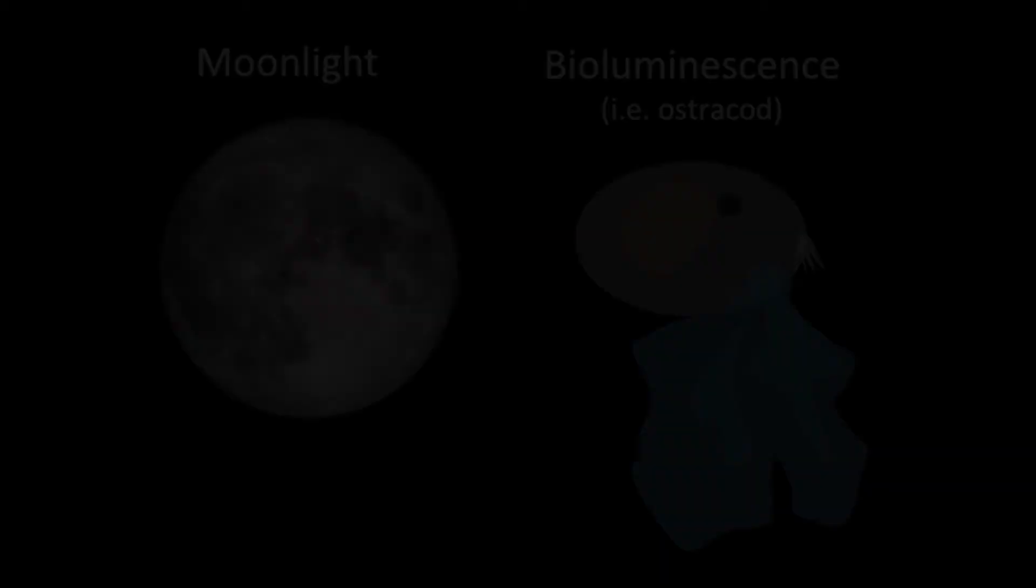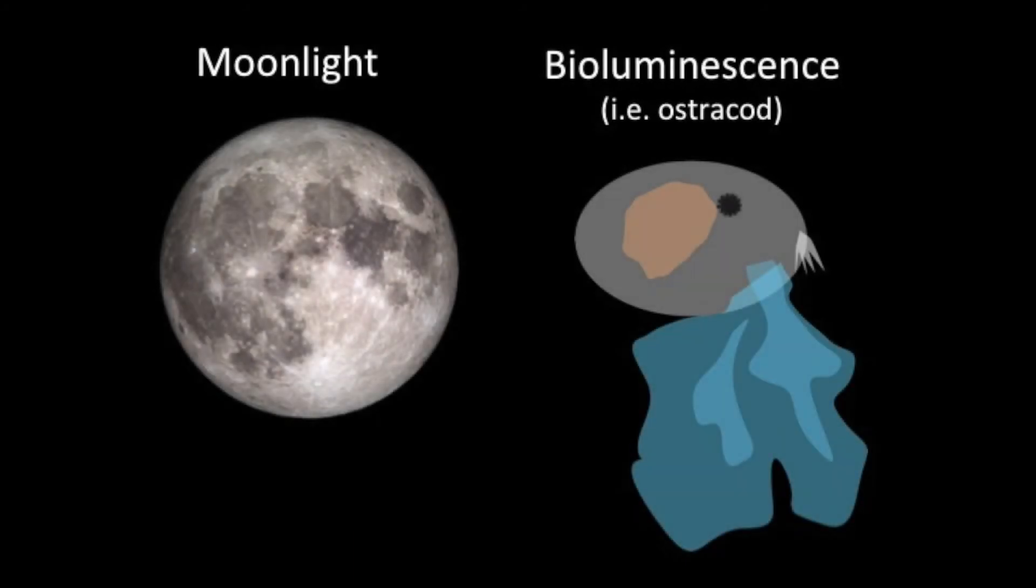So what are nanosquillid larvae using this weird structure for anyway? Only two types of light contain wavelengths long enough to interact with the ISR: moonlight and bioluminescence.